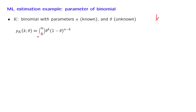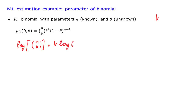Instead of maximizing this expression directly, it is a little easier to maximize the logarithm of this expression. The logarithm consists of: a first term, which is the logarithm of the n-choose-k term; then the logarithm of theta to the k, which is k times log theta; and finally, the logarithm of the last term, which is (n minus k) times log of (1 minus theta).